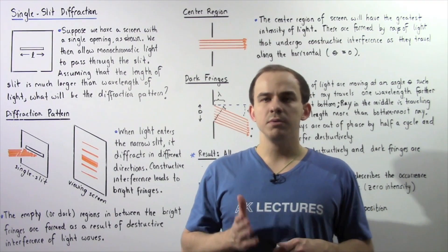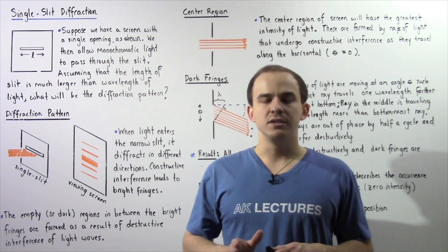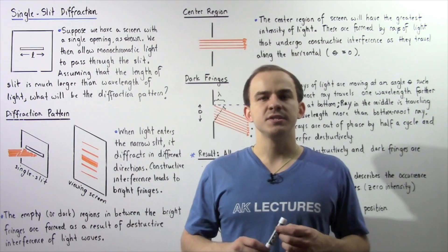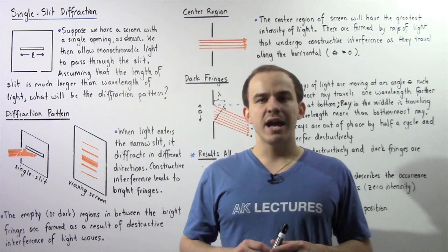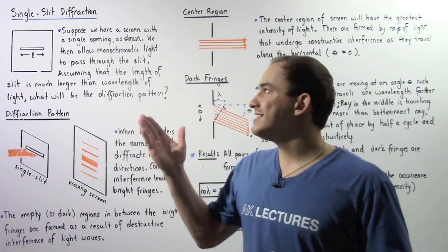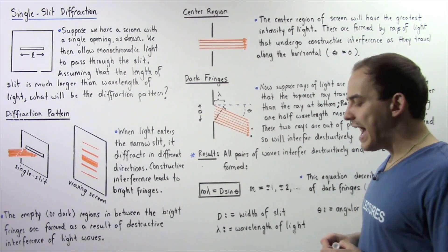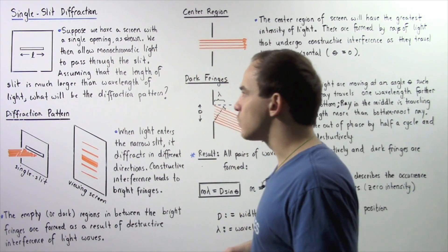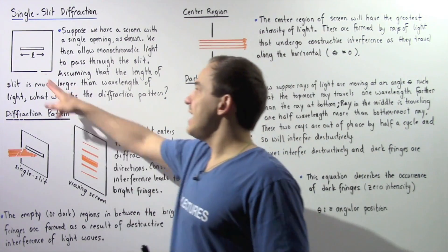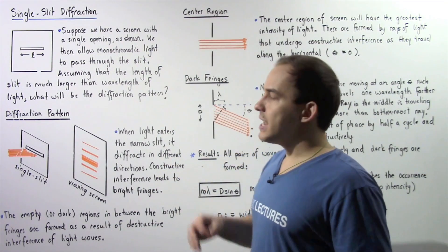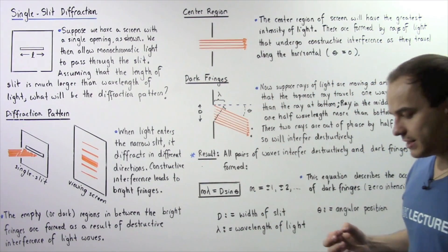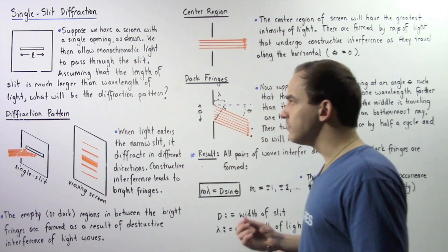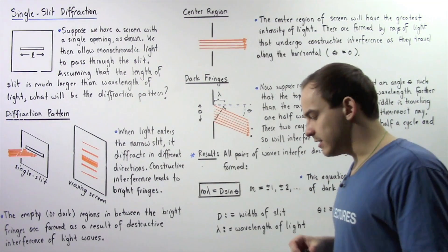Previously in our discussion on the double slit experiment, we discussed the diffraction pattern formed as a result of wave interference through our double slit. Now let's examine the diffraction pattern as a result of a single slit. Suppose we have a screen with a single narrow opening as shown in this diagram. The length of our opening is given by L. We then allow monochromatic light — light that consists of a single color, a single wavelength — to pass through this slit.